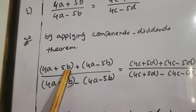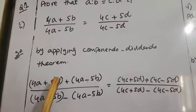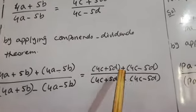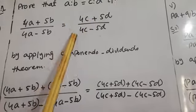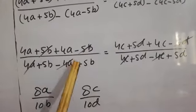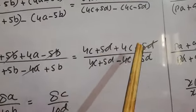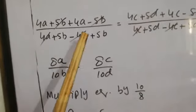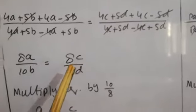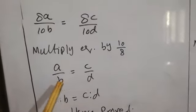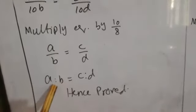We will write: 4A plus 5B plus 4A minus 5B divided by 4A plus 5B minus 4A minus 5B, and similarly for the right side. After removing brackets and changing signs: 5B cancels with minus 5B, 4A cancels with minus 4A, 5D cancels with minus 5D, and 4C cancels with minus 4C. We get 8A by 10B equals 8C by 10D. Multiplying the equation by 10 by 8, we get A by B equals C by D, which means A ratio B equals C ratio D. Hence proved.